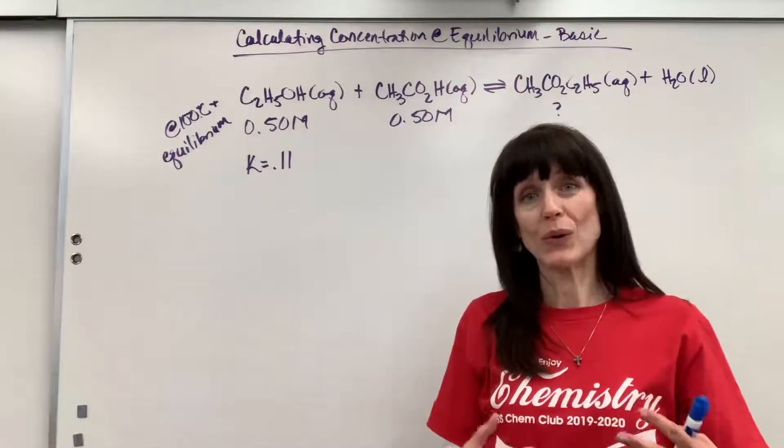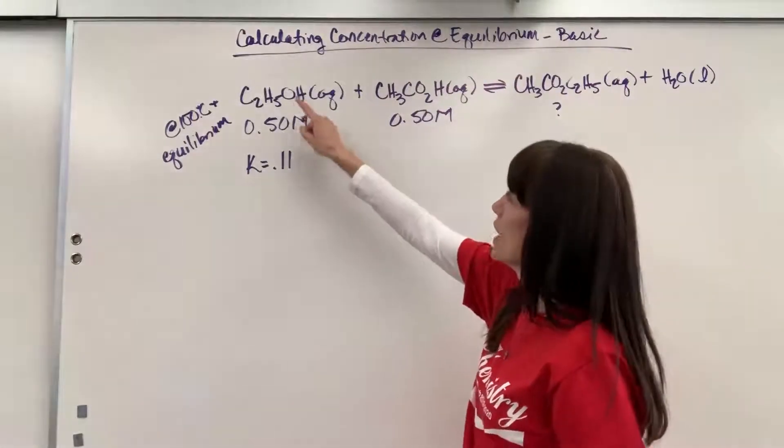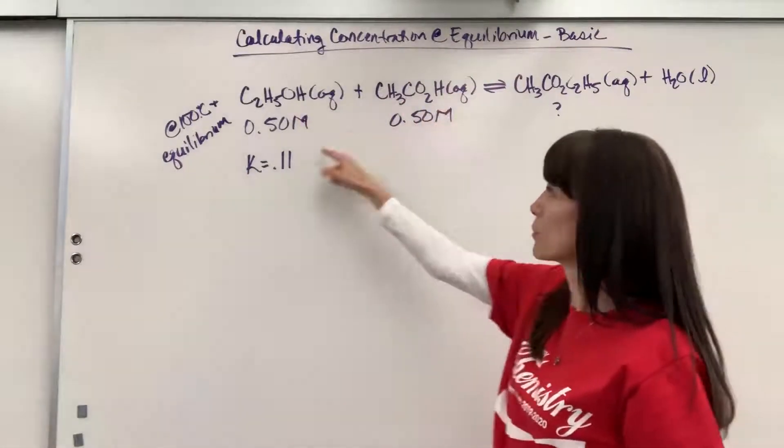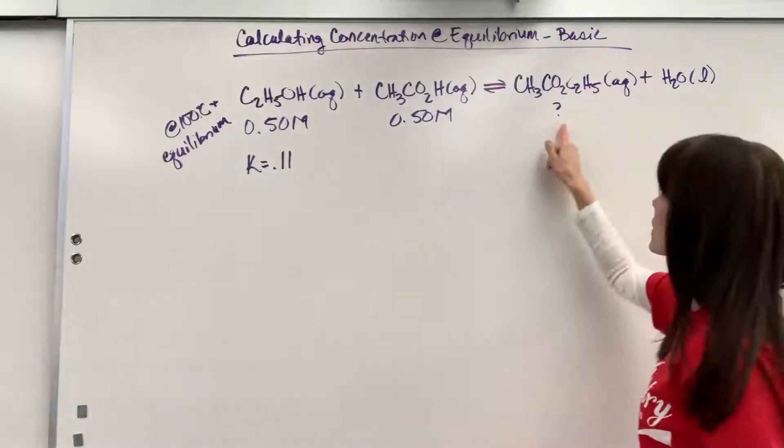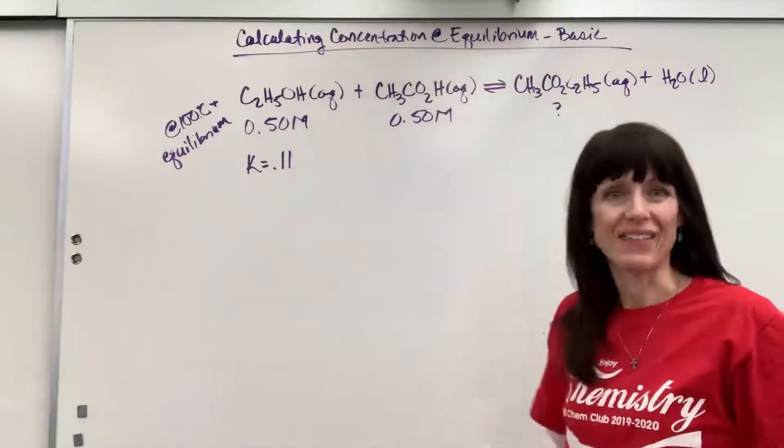At equilibrium, the concentrations of the ethanol and acetic acid are both 0.5. The question is, what's going to be the concentration of the ethyl acetate at equilibrium?